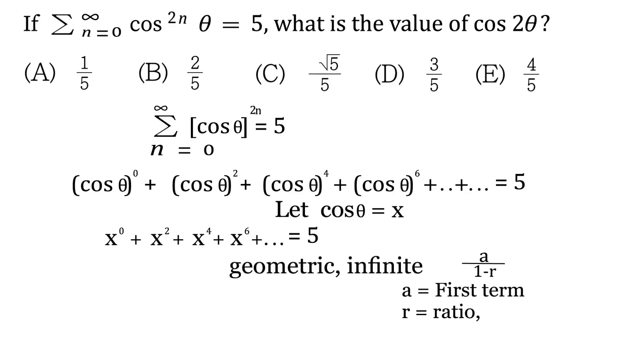So in our geometric infinite series here, our first term is x to the 0, which is basically 1. Anything to the power of 0. Our ratio is x squared over x0, which is x squared. And just to be on the safe side, we can do it once more, x to the 4th over x squared, that's also the ratio, and that's also x squared. So therefore, r is definitely x squared.